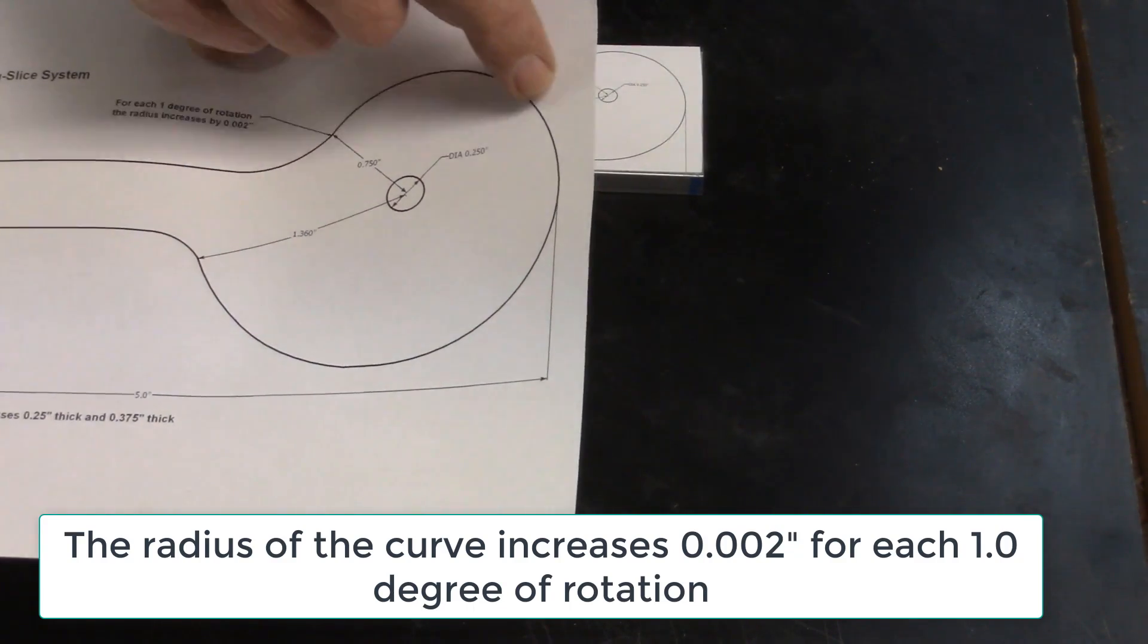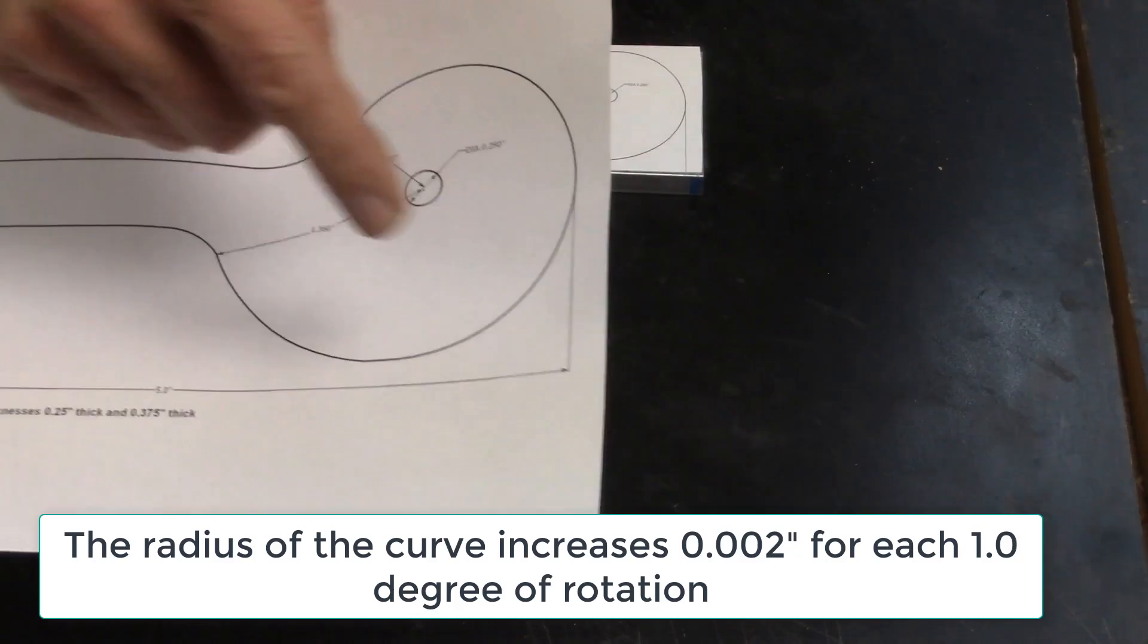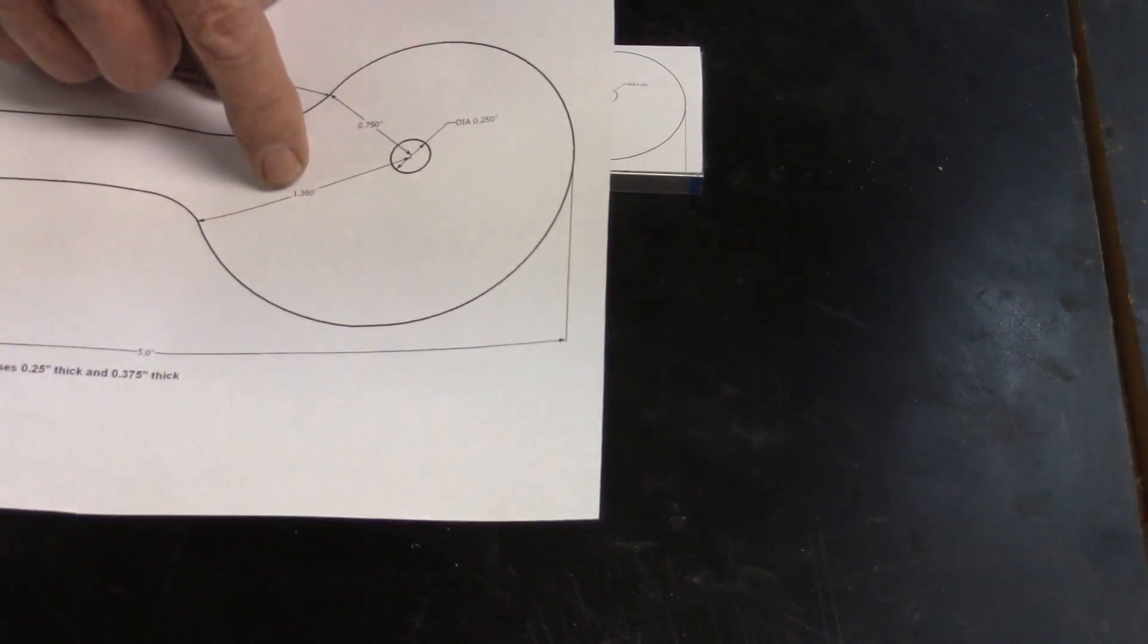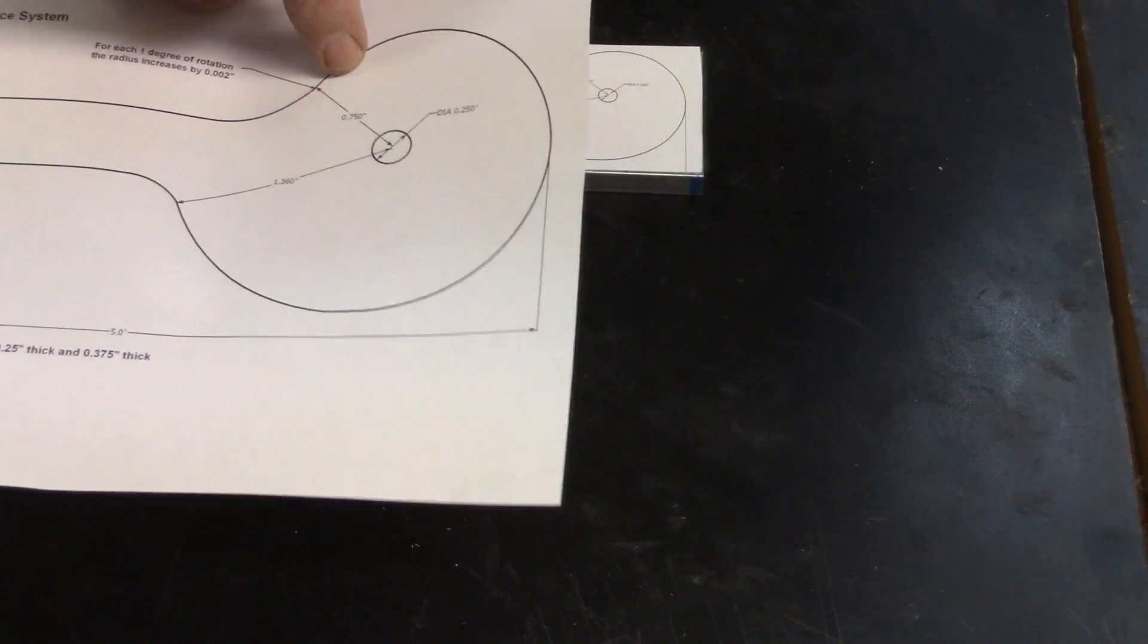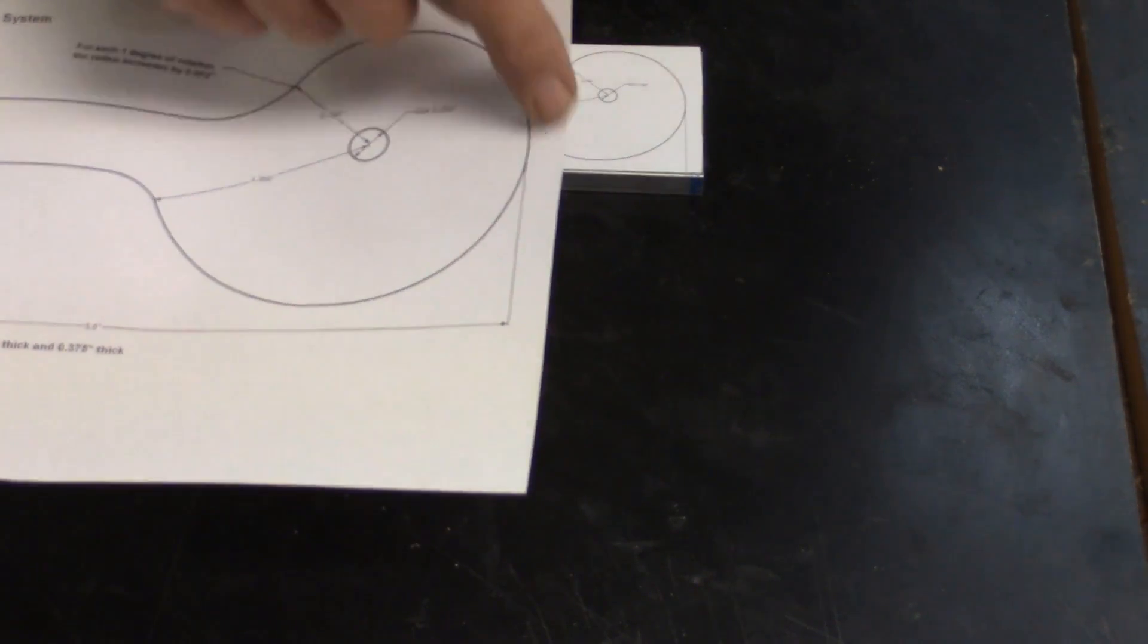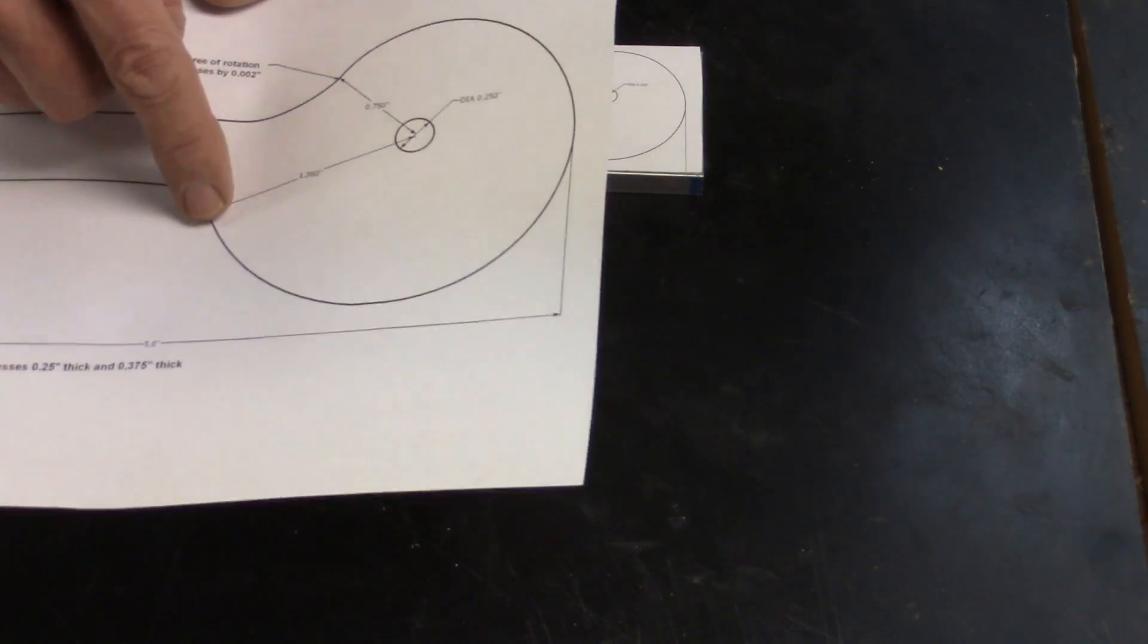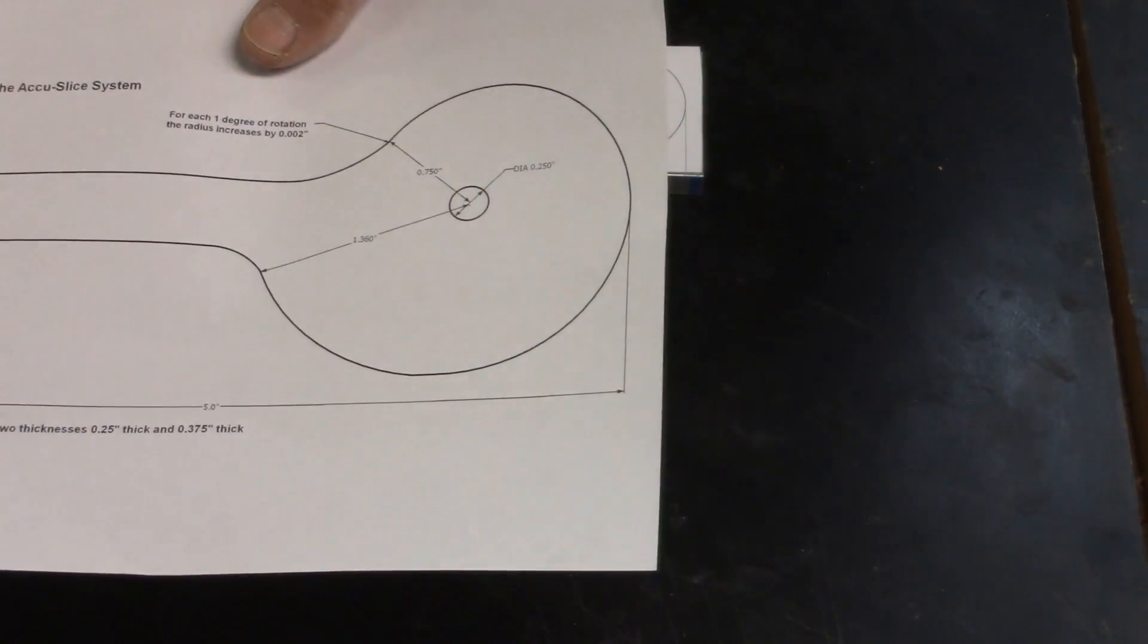It's important to be a linear progression all the way around. So I'm going from three-quarter of an inch all the way up to one-point-three-six inches. Every degree in rotation is two-thousandths of an inch. So it gives me a little over half an inch, almost point-six inches in travel from my offset cam.